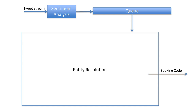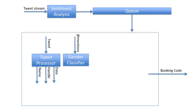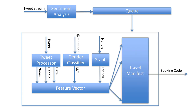That entity resolution component might include a tweet processor extracting name, handle, and date; a gender classifier looking at mentions; a graph component using the Twitter handle to find friends — then comparing this entire feature vector against a travel manifest to find the most likely candidate and return the booking code. It's an impressive system.